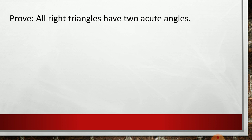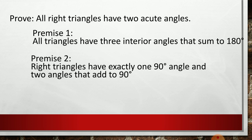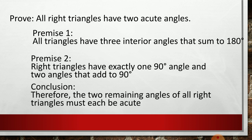So let us prove that all right triangles have two acute angles. The possible premises are: Premise one — all triangles have three interior angles that sum to 180 degrees (the interior angle theorem). Premise two — right triangles have exactly one 90-degree angle and two angles that add to 90 degrees (the definition of a right triangle). From these two premises, we can now prove that the two remaining angles of a right triangle will be acute.